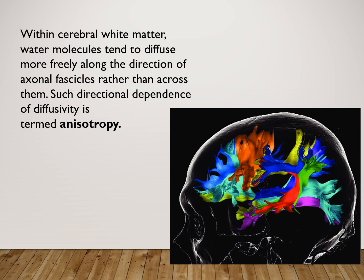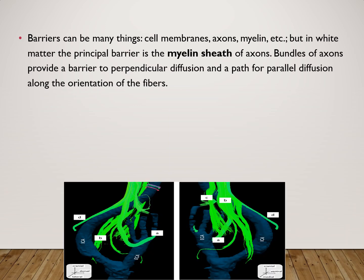Within the cerebral white matter, water molecules tend to diffuse more freely along the axonal vesicles rather than across them. Such directional dependence of diffusivity is termed as anisotropic. The barriers can be many things like cell membranes, axons, myelin, etc.